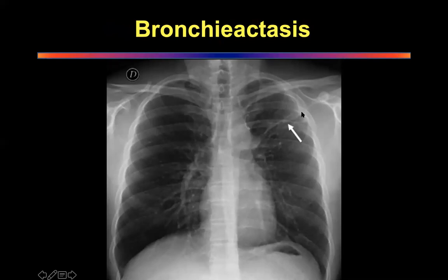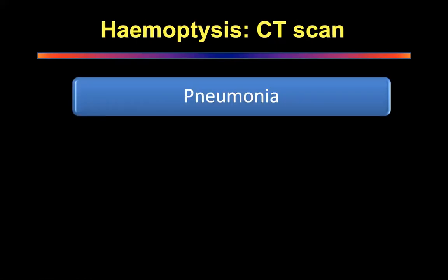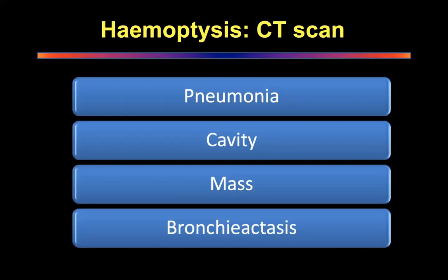CT scan is mandatory — it may show pneumonia, cavitation, mass, or bronchiectasis, revealing the actual pathology. CT scan is quite sensitive. The main problem is that most CT scans are done after hemoptysis has settled, making localization of the bleeding source difficult. However, there are very good clues on CT that indicate where the problem originates.